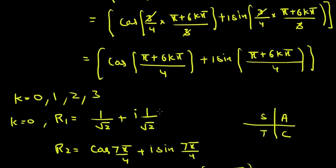Now we put k = 0, 1, 2, 3. When k = 0, the first root R1 is cos(π/4) + i sin(π/4), which is 1/√2 + i(1/√2). When k = 1, the angle becomes (π + 6π)/4 = 7π/4 in both the cosine and sine terms.